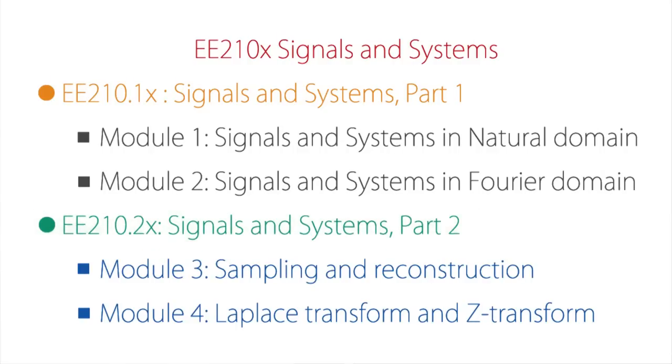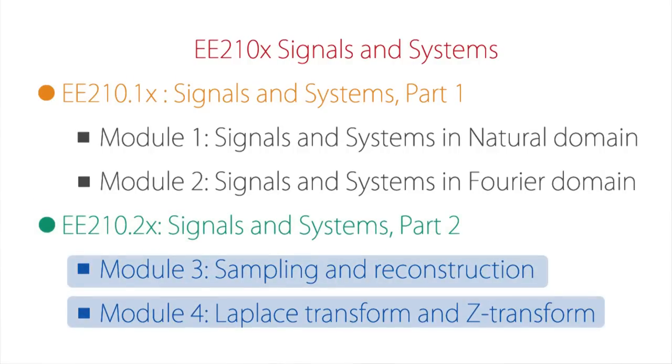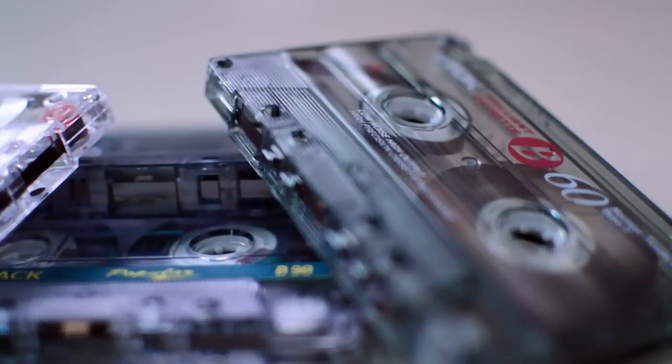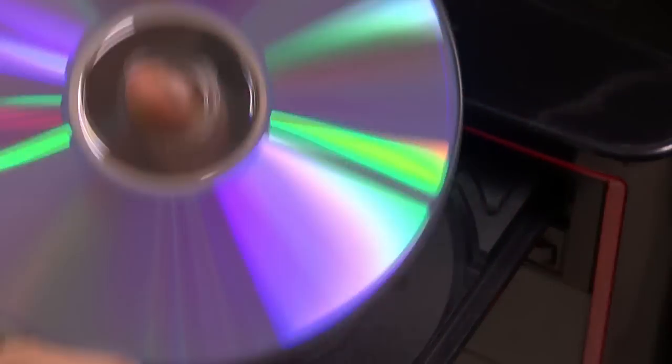In the second course we would have two modules — Module 3 and Module 4. Module 3 would look at bringing the two together: continuous and discrete independent variable systems. For example, how would we relate the magnetic tapes of the olden days which recorded audio — the cassettes as you knew them — and today's digital audio? That is the question of sampling and reconstruction.